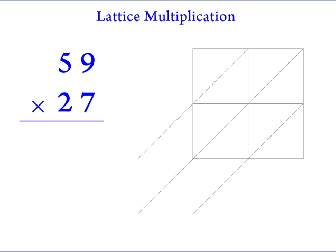In this example, we will find the product of 59 and 27 using the 2x2 lattice that is drawn. This method is known as lattice multiplication.